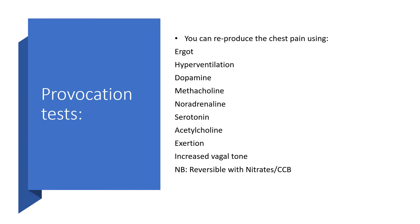You can embark on provocation tests — that is, you can reproduce the chest pain signs and symptoms using ergot, hyperventilation, dopamine, methacholine, noradrenaline, serotonin, acetylcholine, exertion, and increased vagotonia. One good thing here is that if you run into trouble carrying out this provocation test, these effects are reversible with nitrates and calcium channel blockers.